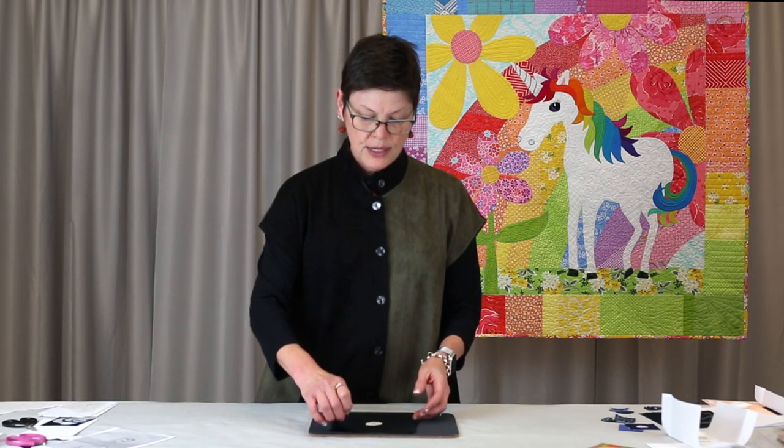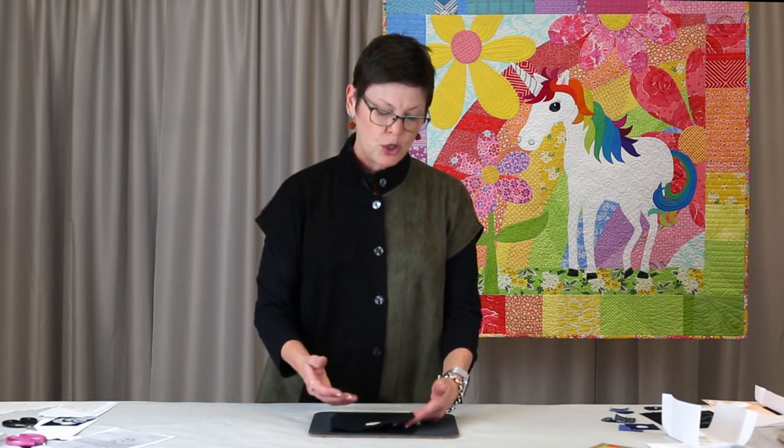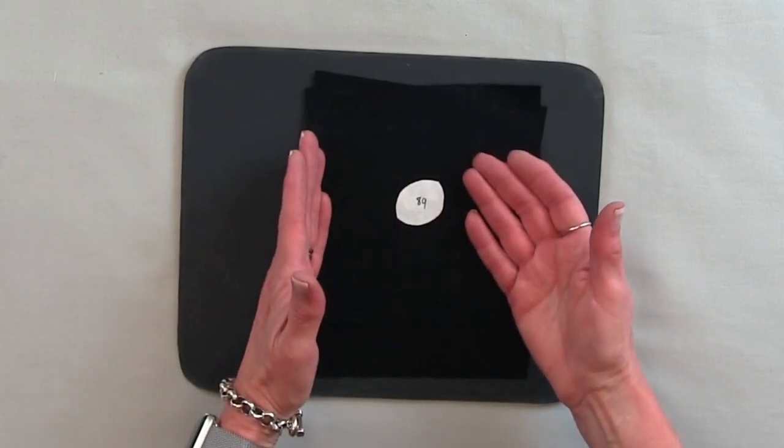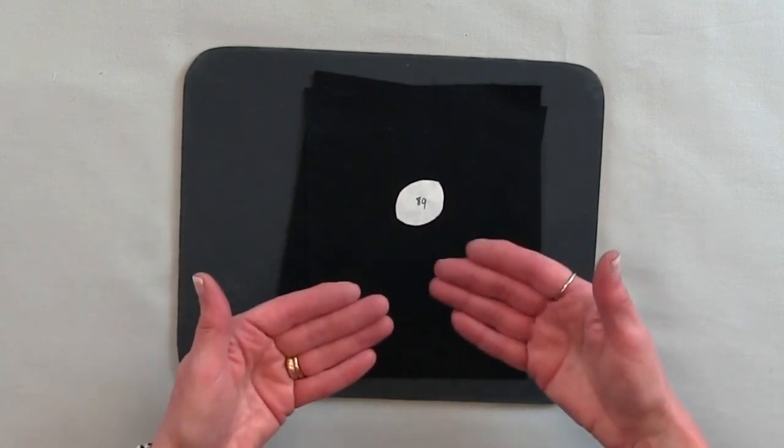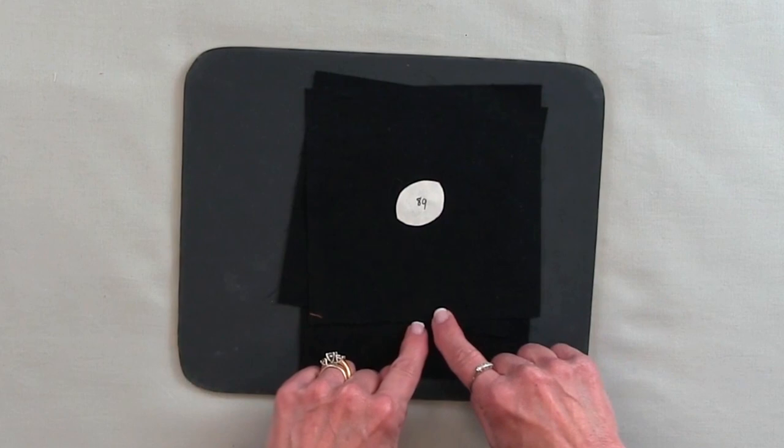In both cases, whether you're working on the larger eye or the smaller eye, you work applique wise from the bottom up. So the underneath piece on the eye, there's four layers of eye fabrics, the underneath piece you want to keep a little bit bigger.